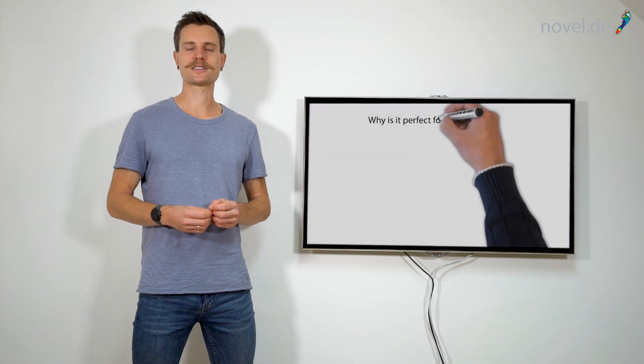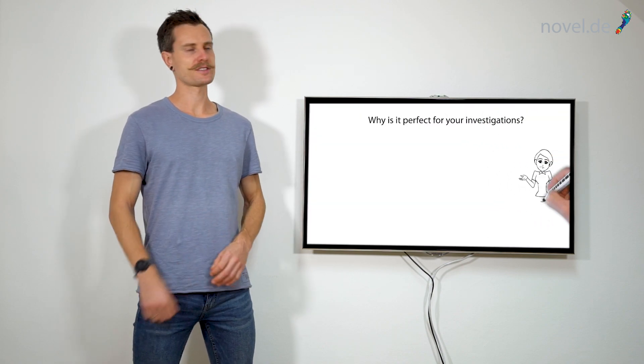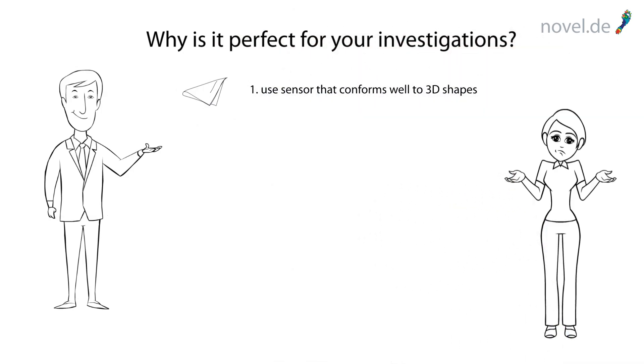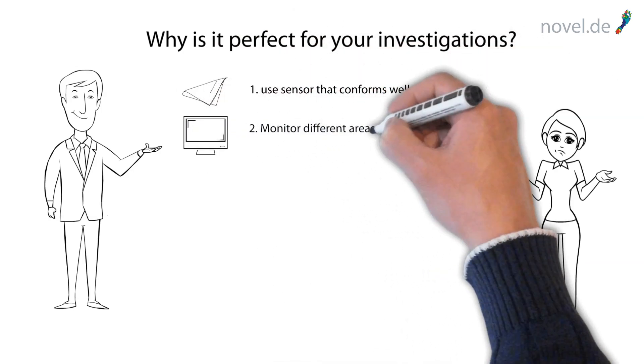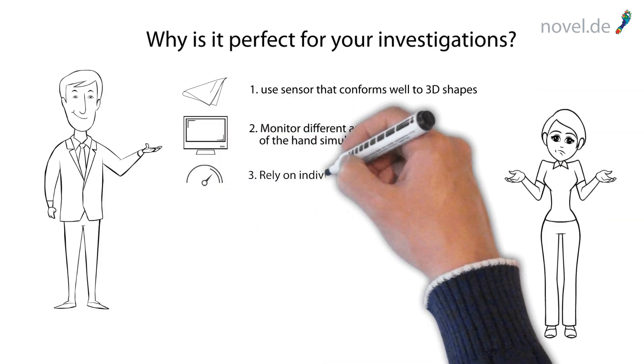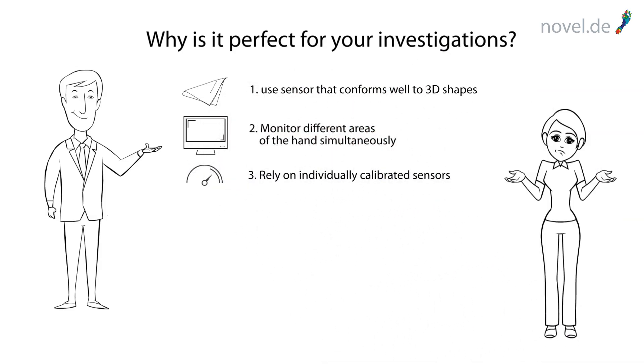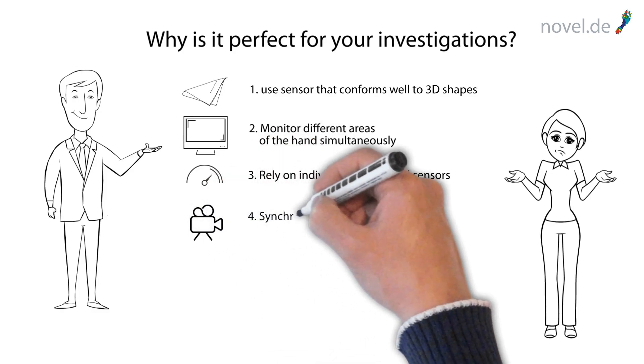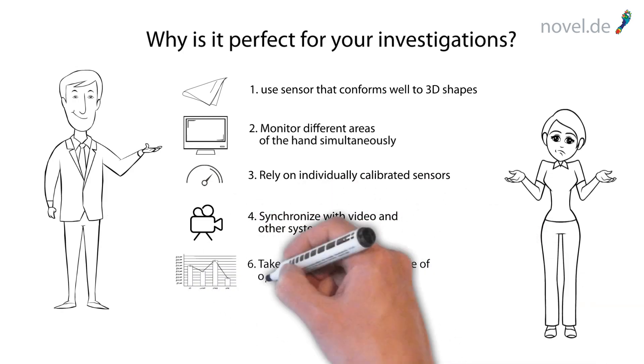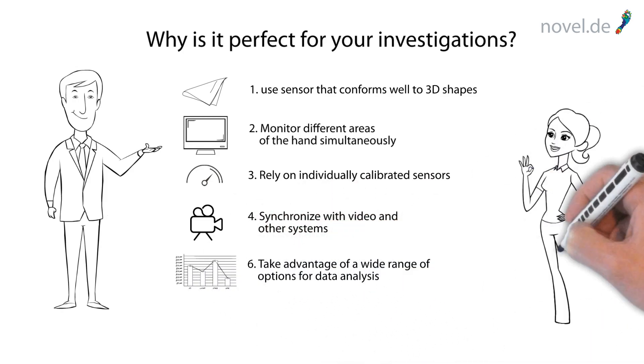What makes the system the perfect tool for your investigations? Use a soft sensor that conforms well to three-dimensional shapes. Monitor different areas of the hand simultaneously. Rely on individually calibrated sensors. Synchronize with video and other systems like motion capture or EMG. Take advantage of a wide range of options for data analysis.